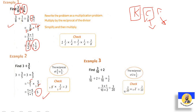Next: three-tenths divided by two. Two becomes two-over-one. Keep three-tenths, change division to multiply, flip two-over-one to one-over-two. No simplification possible. Three times one equals three, ten times two equals twenty. The answer is three-twentieths.